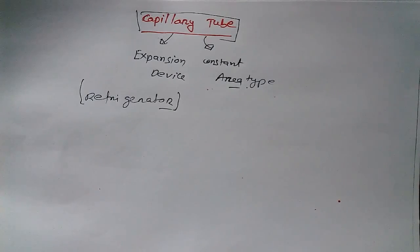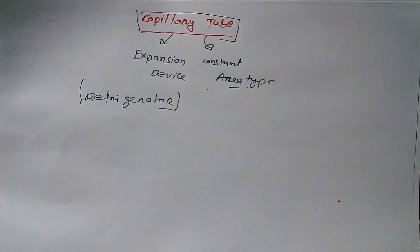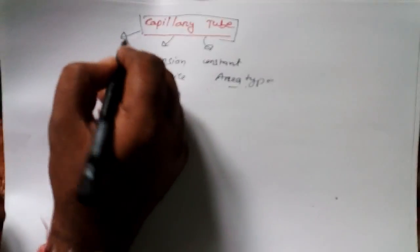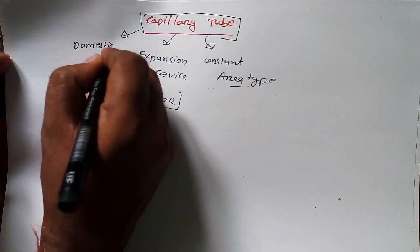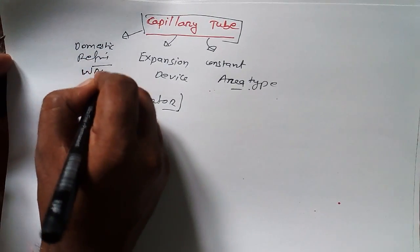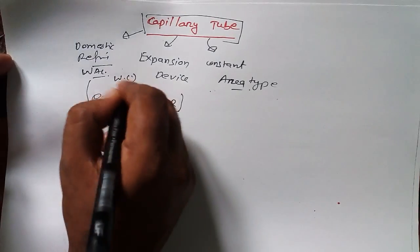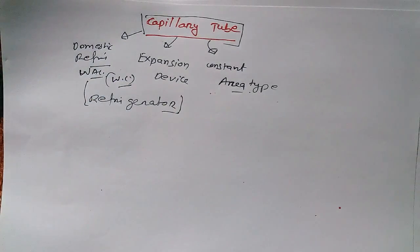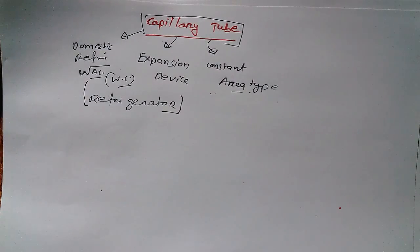This tube is doing two things in a refrigerator. The application of the capillary tube is in domestic refrigerators, window AC, and water coolers. You may have seen water coolers in the street — those use a constant area type expansion device.